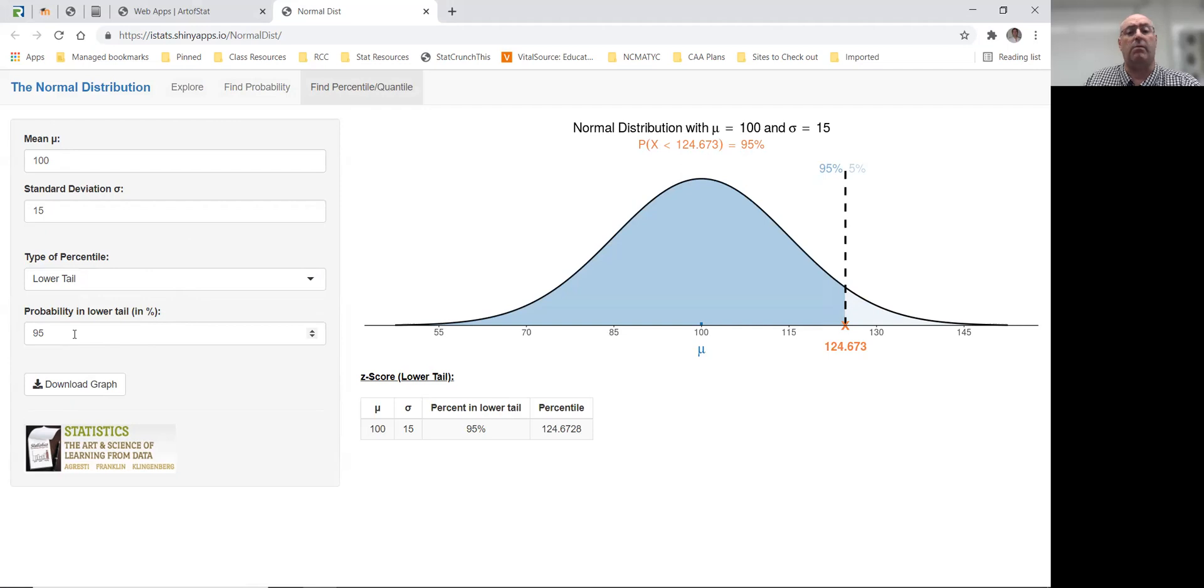So, for example, I want to know what IQ score is the 30th percentile. So I would put 30 in the box here, and I would see that an IQ score of about 92 is the 30th percentile.